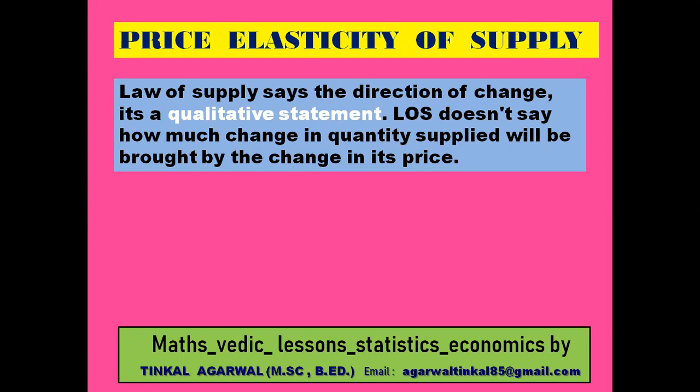The law of supply states that when price increases, supply increases, and when price decreases, supply decreases — price and supply are positively related. This is a qualitative statement; it says the direction of change, but the law of supply does not say how much change in quantity supplied will be brought about by a change in price.